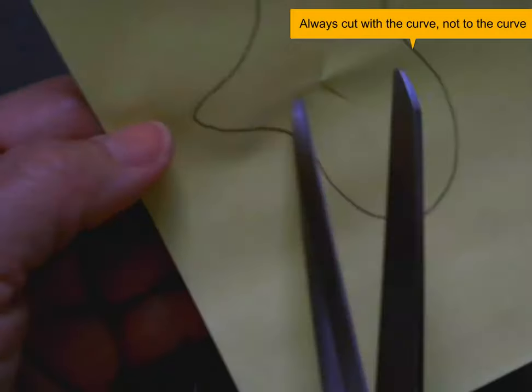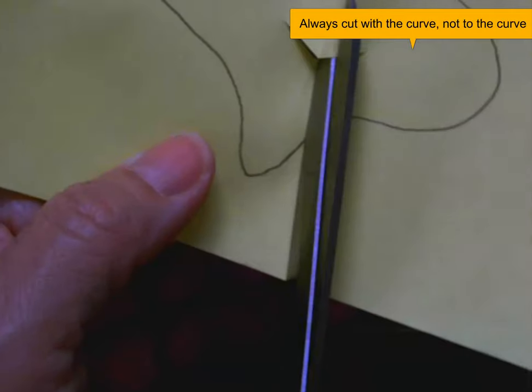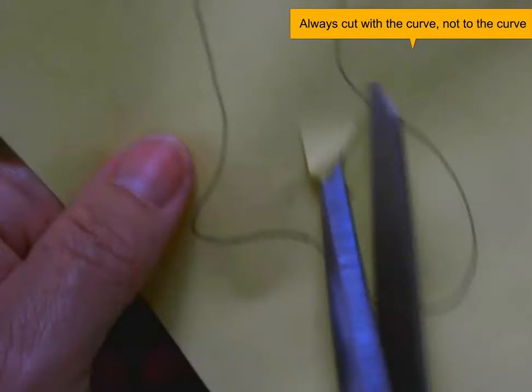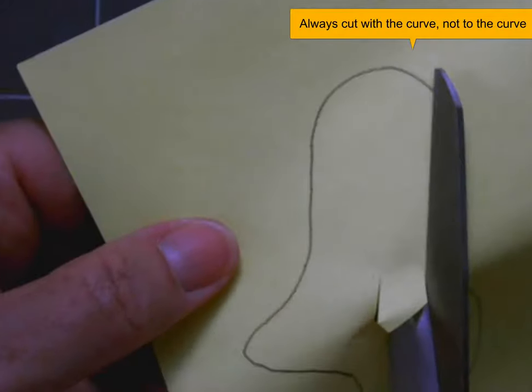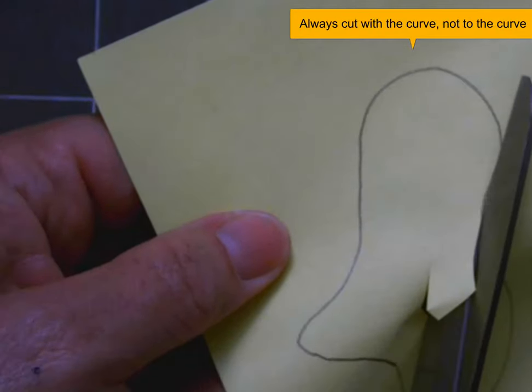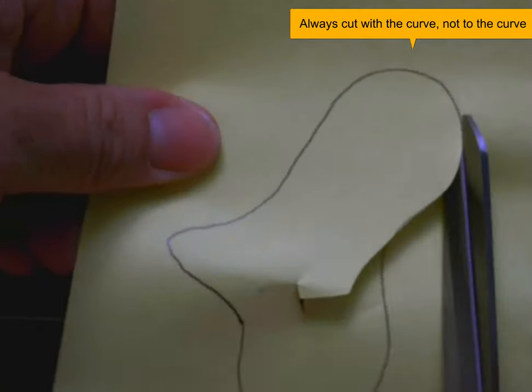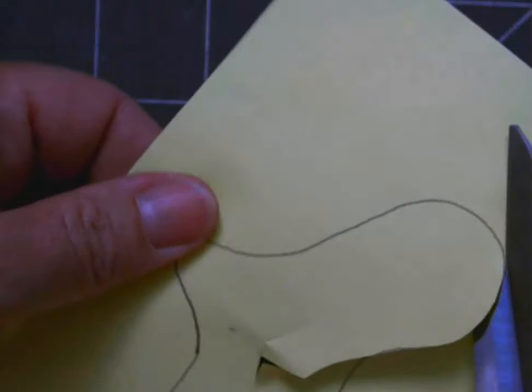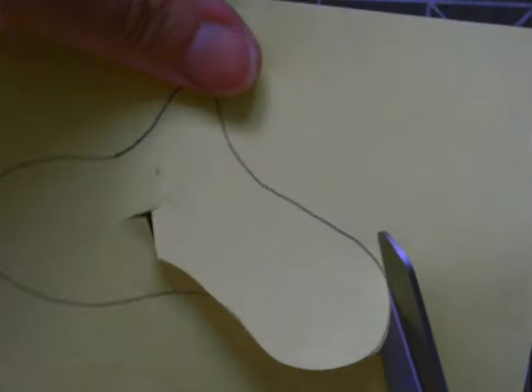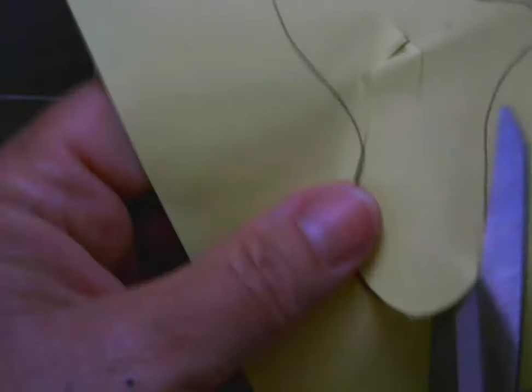Even on the inside here, as I'm cutting up to the curve, I want to cut with the curve and not straight to it so that I maintain a clean cut the whole way around. Again, turn the paper, not the scissors when you're cutting out any kind of a shape, and you will have more control.